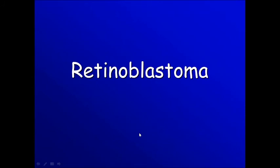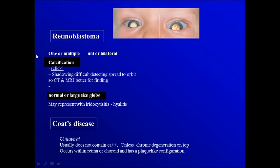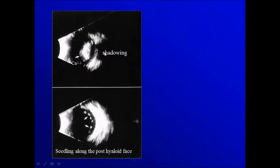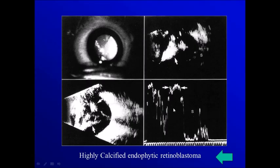Turning to retinoblastoma — it can be unilateral or bilateral and can be single-focus or multifocal. It is characterized by calcification, which can produce shadowing. Sometimes we can see seedlings of the tumor along the posterior hyaloid face. You can see here high reflectivity due to calcification, and on the A-scan, very high spikes.